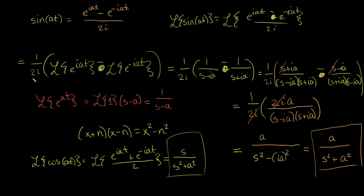In the last video, we showed what the Laplace transform of sine of at is, and gave the method for finding the Laplace transform of cosine of at. The sine of at was a over s squared plus a squared, and cosine of at was s over s squared plus a squared.